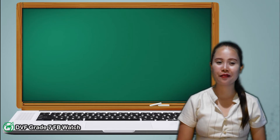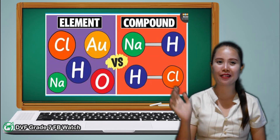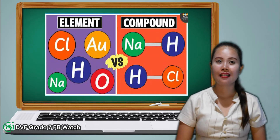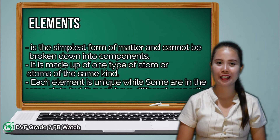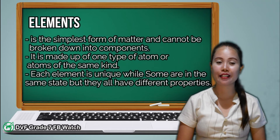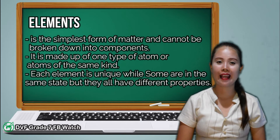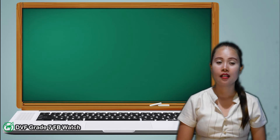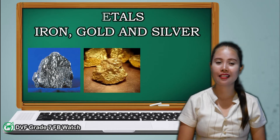To start with our lesson for today, we will learn the differences of elements and compounds. First, let's talk about elements. It is the simplest part of matter and cannot be broken down into components. Elements are made up of one type of atom, or atoms of the same kind. Each element is unique — while some are in the same state, they have different properties. Some elements are metals, like iron, gold, and silver.